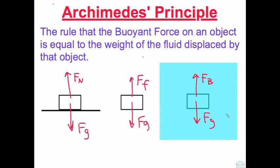Archimedes' Principle is the rule that the buoyant force on an object is equal to the weight of the fluid displaced by that object.